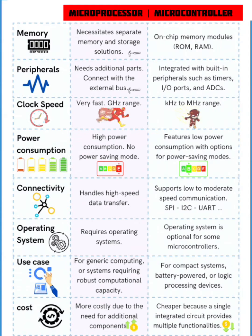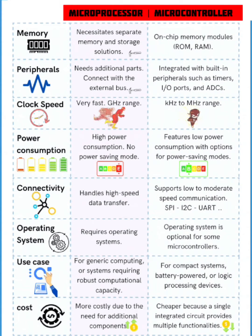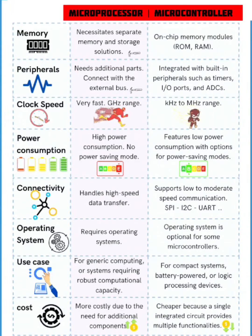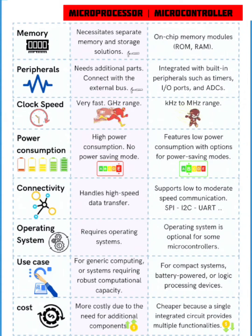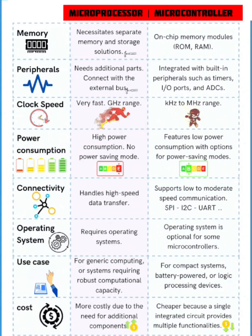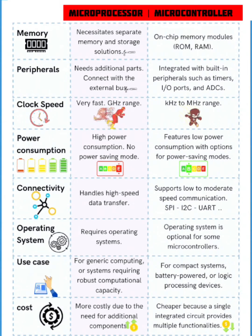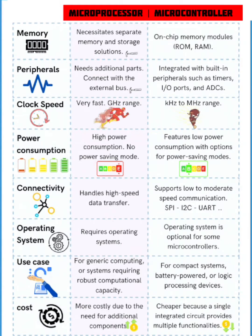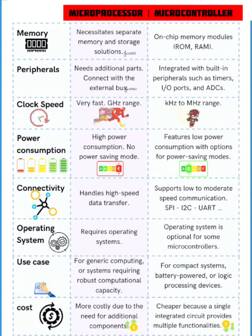Coming to clock speed: microprocessor has high clock speed in the gigahertz range and is very fast. In microcontroller, the operating clock speed is in the kilohertz to megahertz range, so compared to microprocessor, microcontroller speed is less.